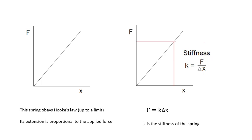As long as you don't go past what we call the elastic limit, then a force extension graph for a spring will be a straight line. In other words, it will obey Hooke's law. Hooke's law says that force is proportional to extension. So, F equals k delta x, where k is a constant. Its extension is proportional to the applied force.